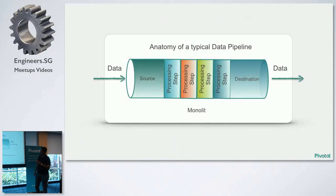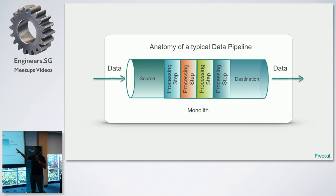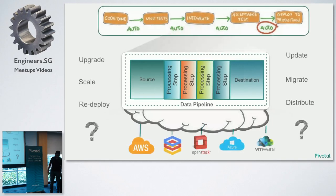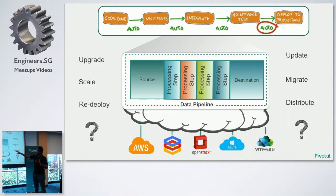If we zoom into the data pipelines — whether it's an integration bus or an ETL tool — you have data coming from one system and moving it to another, doing a lot of processing steps in between: data filtering, data transformation, multiple things before it lands at the destination. The challenge is if this is deployed in a traditional monolithic architecture, any change to one processing step requires a lot of impact analysis — you have to look at how that data is used by other systems, which is a huge mammoth task.